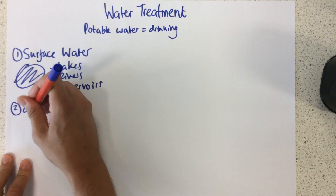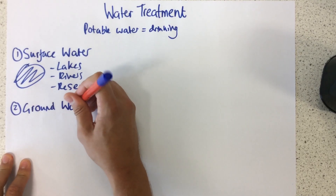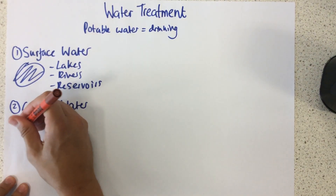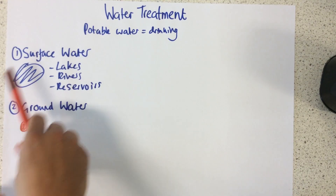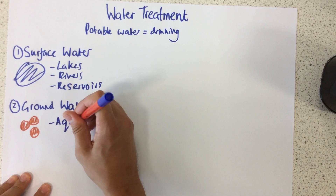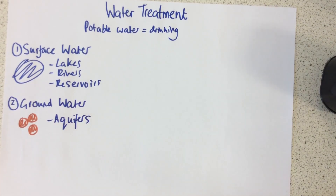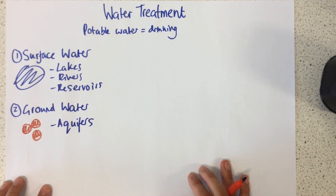So the second source is groundwater. We're normally talking about aquifers. What an aquifer is, is basically just water which is stored under the ground within rock. That's where we can get water from in case our surface water is dried up in summer months.